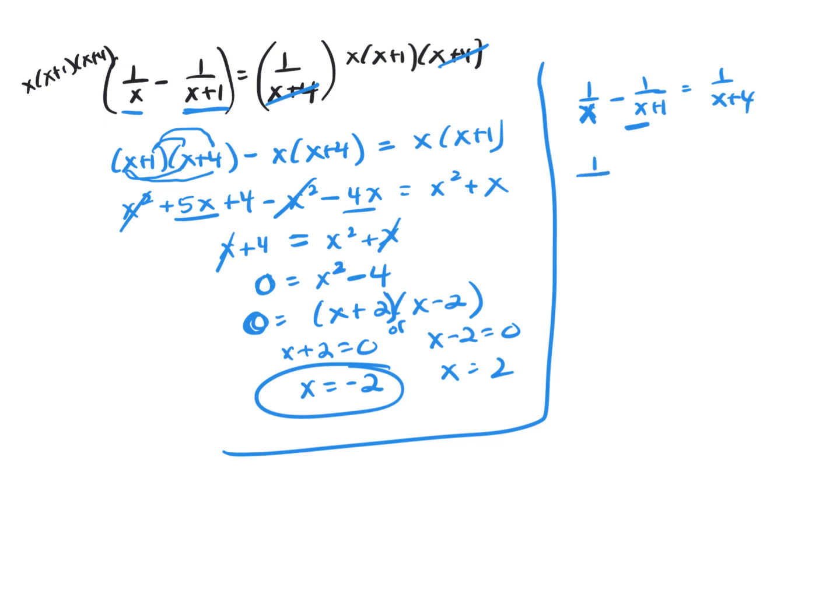You get 1 over negative 2 minus 1 over negative 2 plus 1 equal 1 over negative 2 plus 4. And don't switch things from side to side. Just let it be.